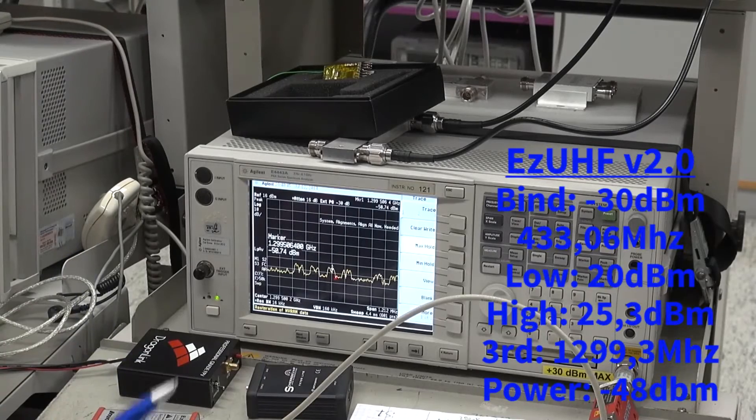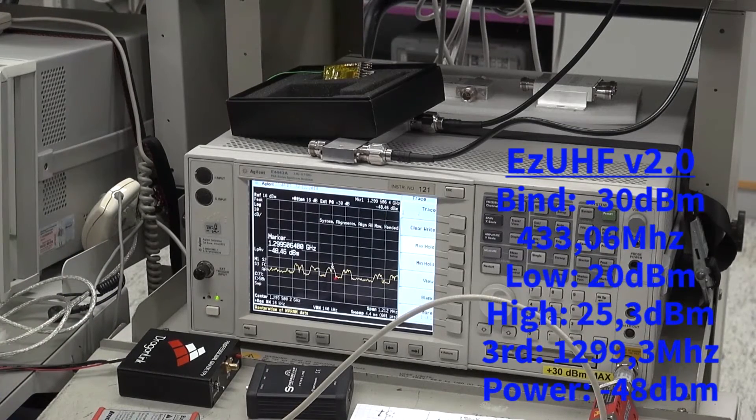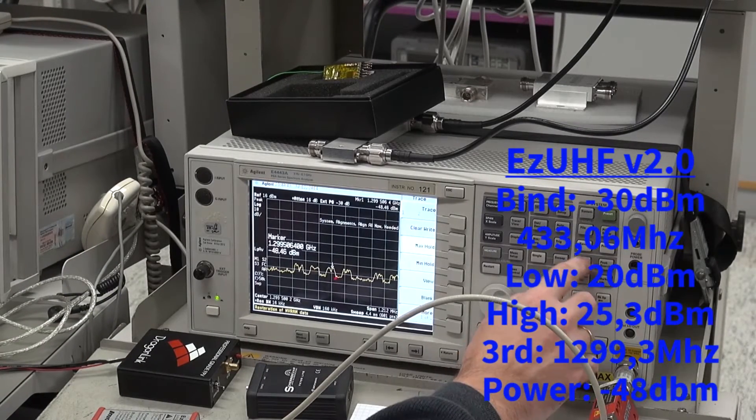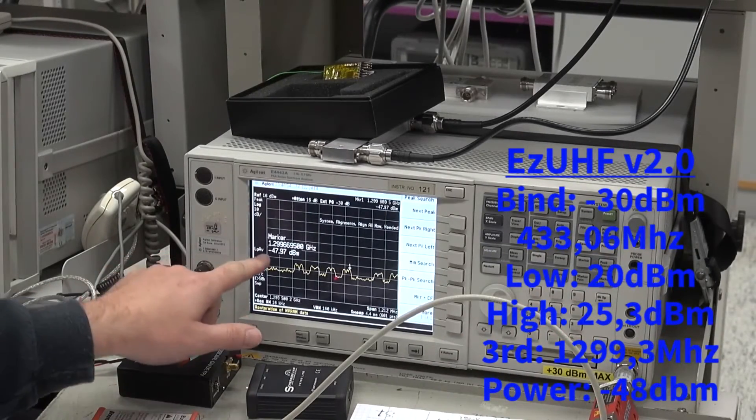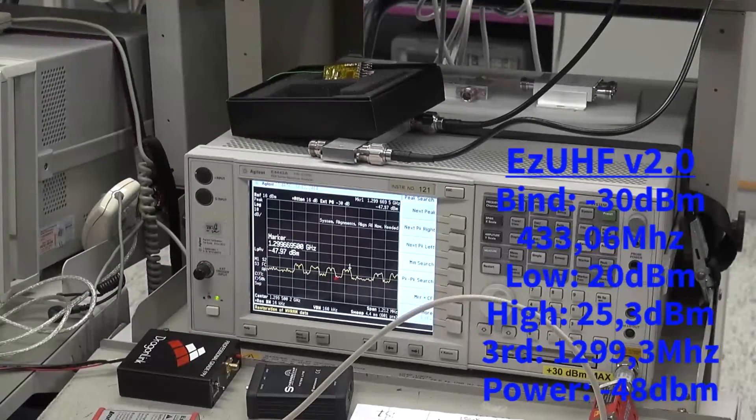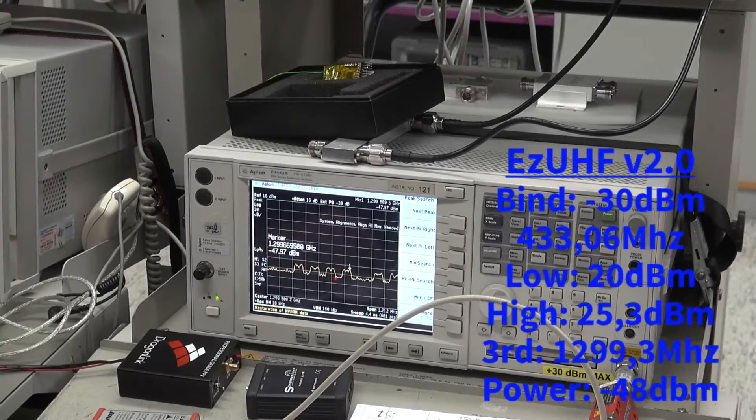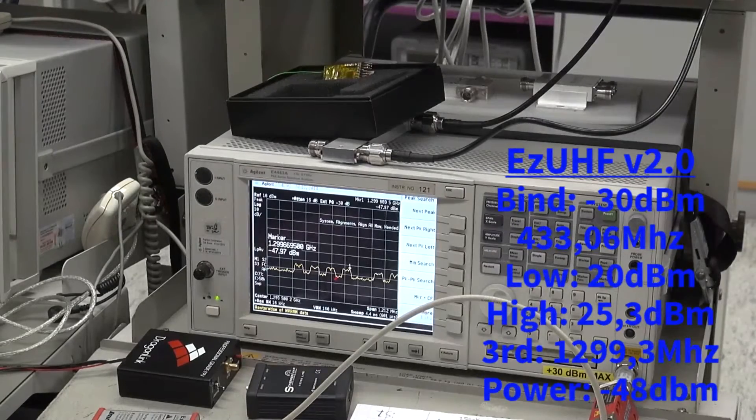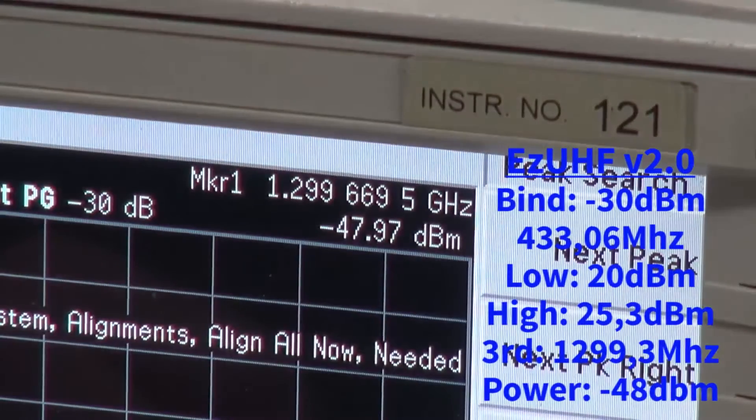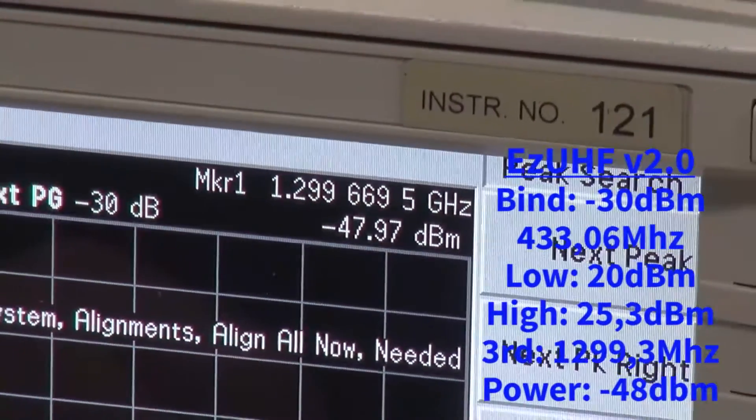With the max hold I'm able to reveal the harmonics, and with the peak hold you can see the harmonics is minus 47 dBm. So that is a lot of harmonics, gentlemen, like 100 times more.